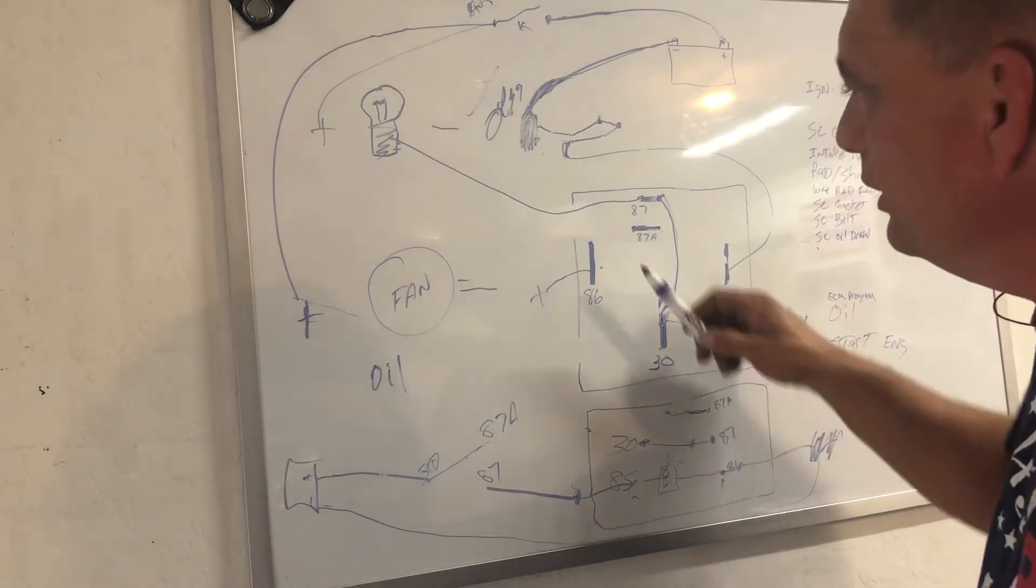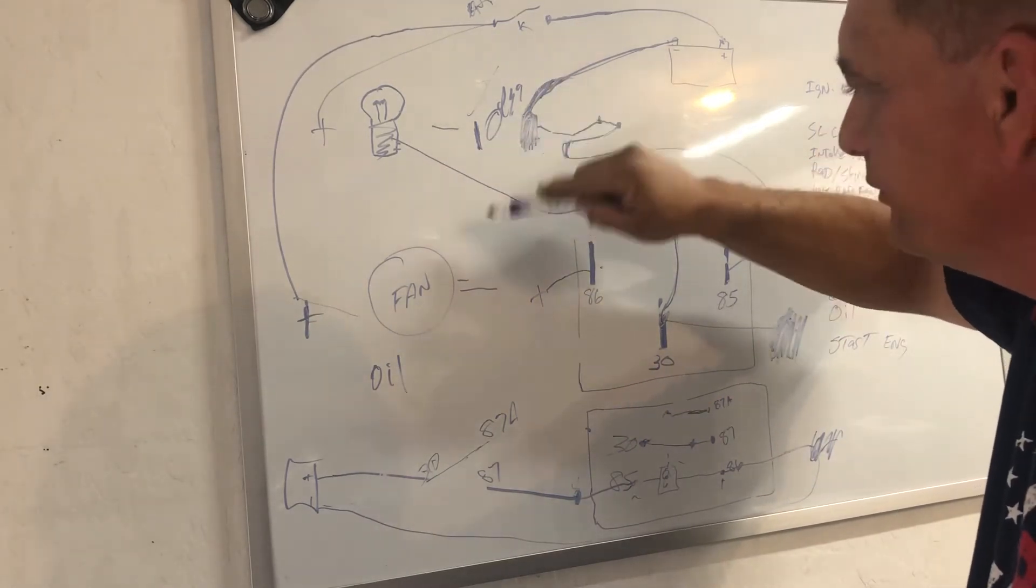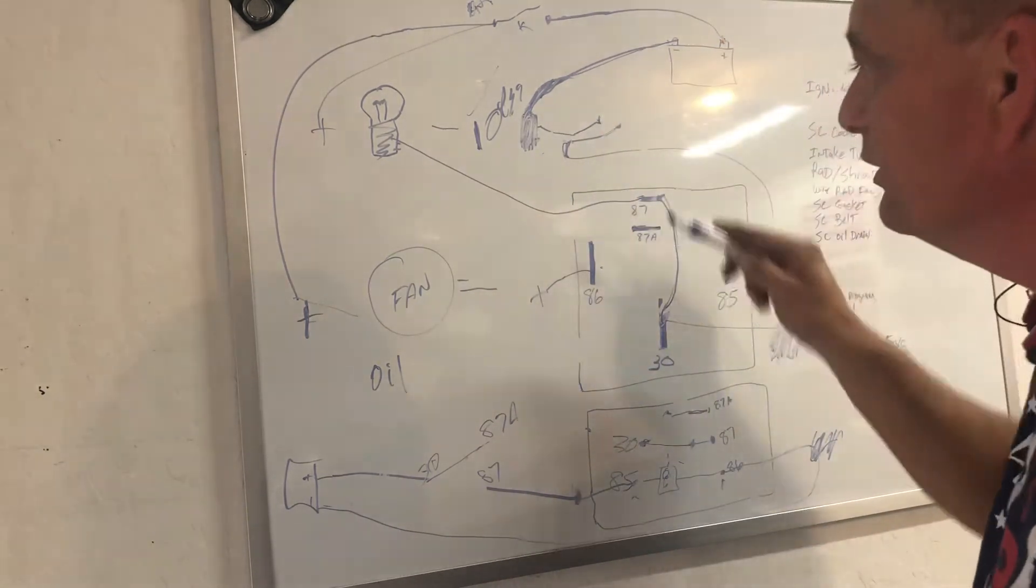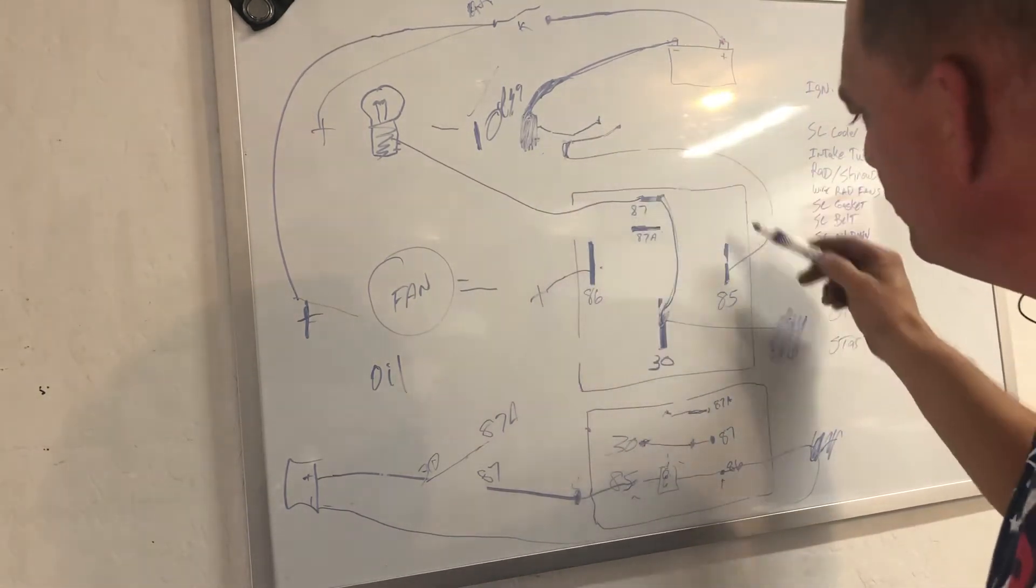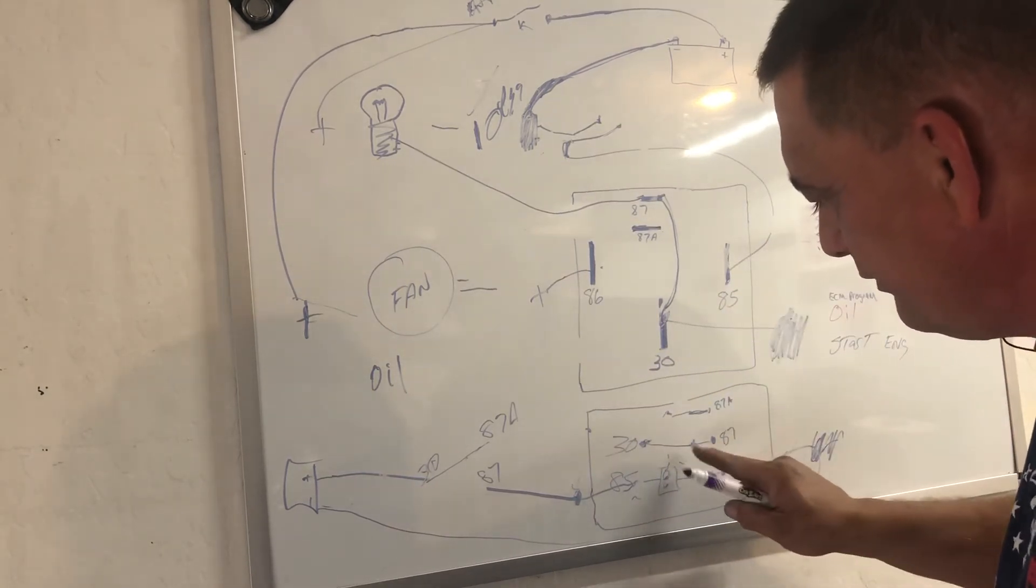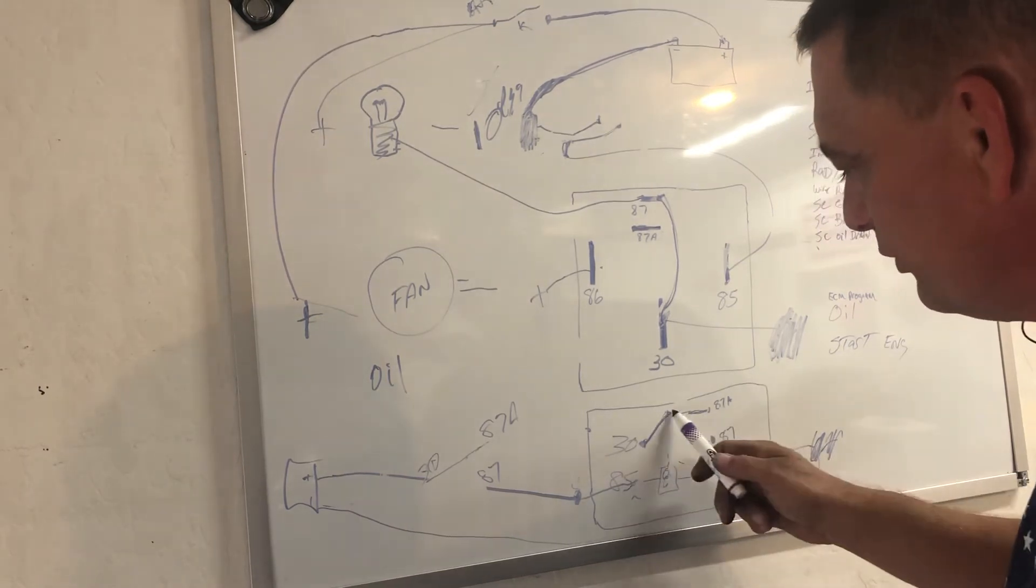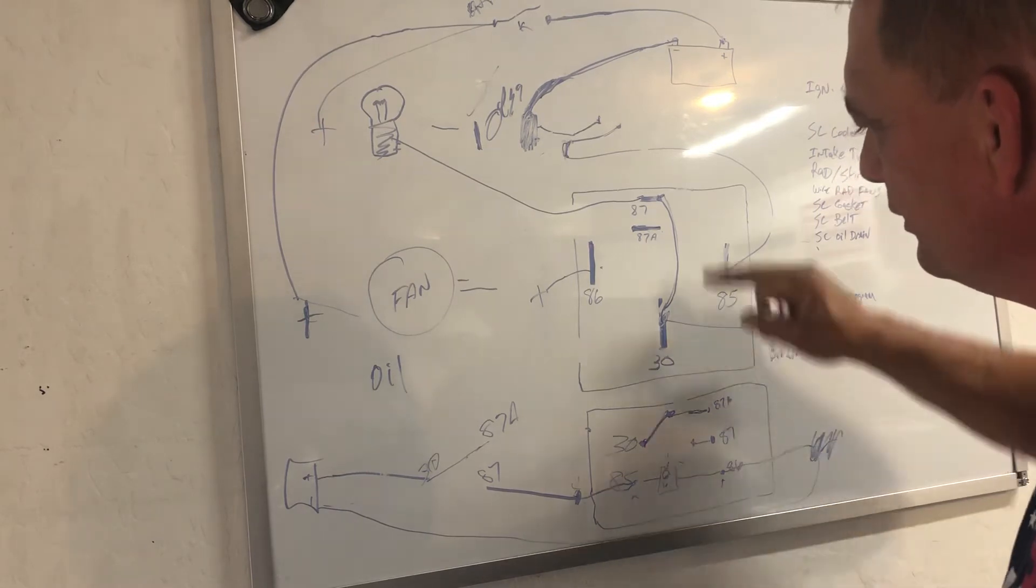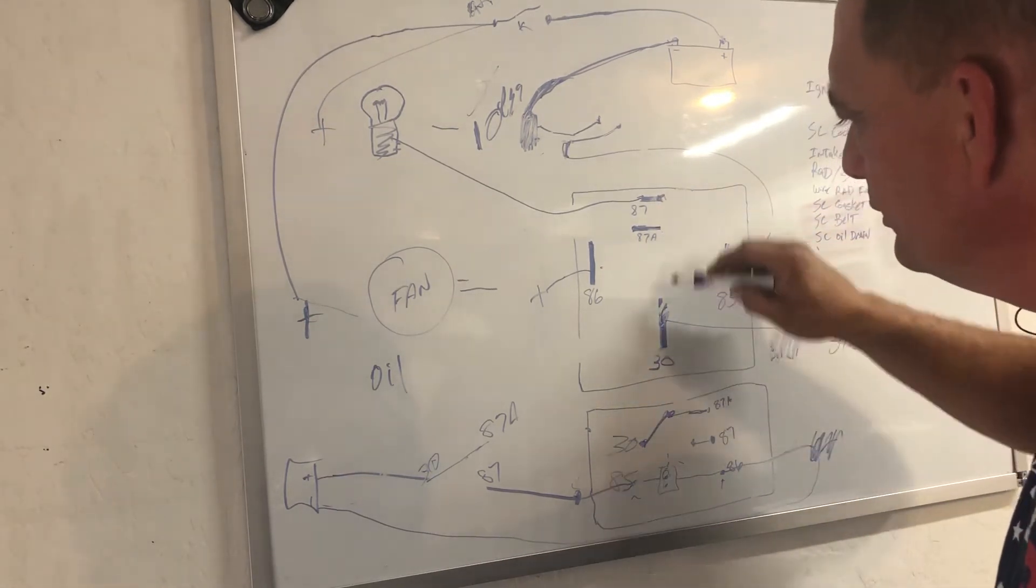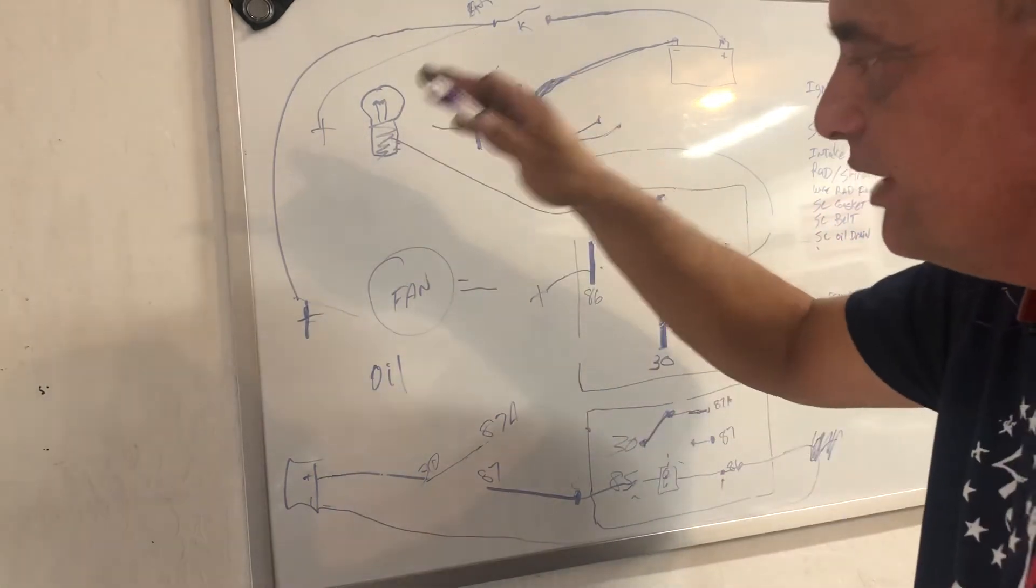When the engine starts, you get some oil pressure, 10 pounds, whatever poundage, it will open this gate. Now you have lost your negative power to 85. The solenoid now shuts off, springs back to its relaxed mode, which is touching 87A. You now lose the power to 87, which is your light, so your light goes out.